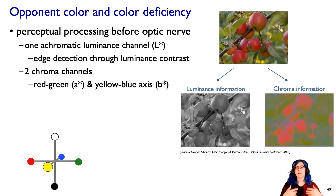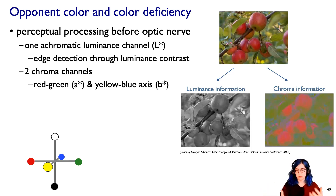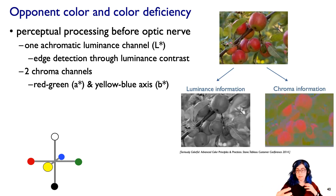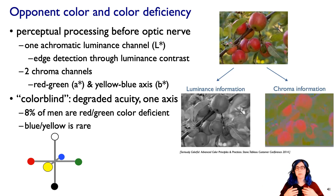Then there are two chroma channels — think of these as axes along which we can detect changes. One of these, called A*, is the red-green axis, and B* is the yellow-blue axis. What we call color blindness is that we don't have much acuity in one of those axes.